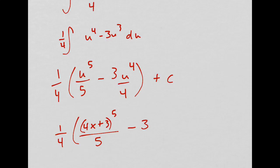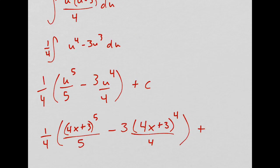Minus, oh no, minus 3 times the quantity 4x plus 3 to the fourth over 4. Oh my goodness. Close those parentheses. Plus c.